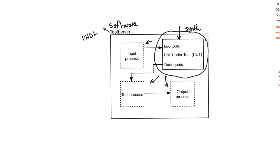You can use unsynthesizable constructs, loops any way you want, variables and signals mixed together — you can do whatever you want. This is really the main advantage of software test benches: they allow you a lot of flexibility, basically programming-like flexibility. You will use this flexibility to do two things: first, to generate inputs that you apply to the unit under test, and second, to assess the outputs that come out of the unit under test.